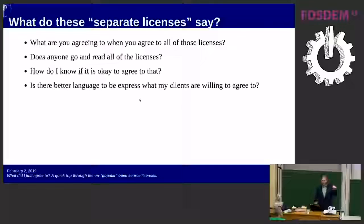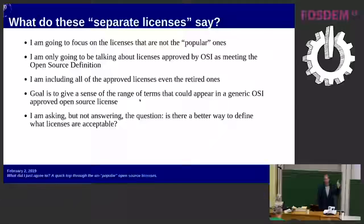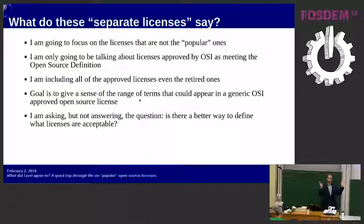So I went through and did that, and I pulled out some of the things that surprised me — things I don't really think about when I think about an open source license. I have my idea of what it means to be open source, and there's the open source definition, but my theories don't actually line up with all of the open source licenses approved by OSI, certainly not all the licenses out there that people call open source. My goal is to give you a sense of what you might be agreeing to when you accept material under any OSI-approved open source license.